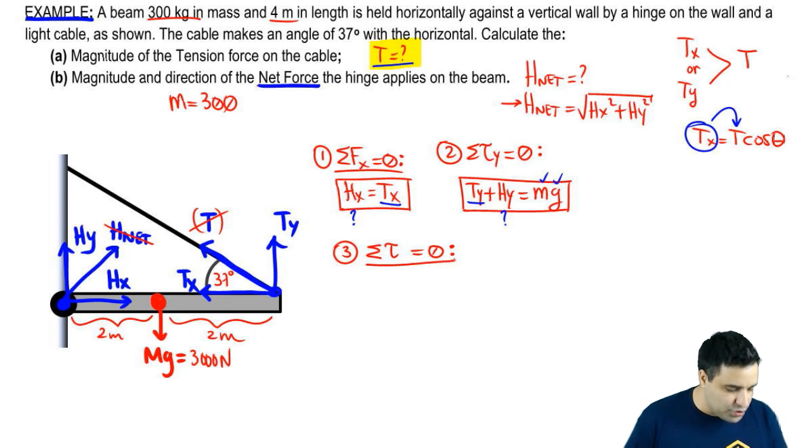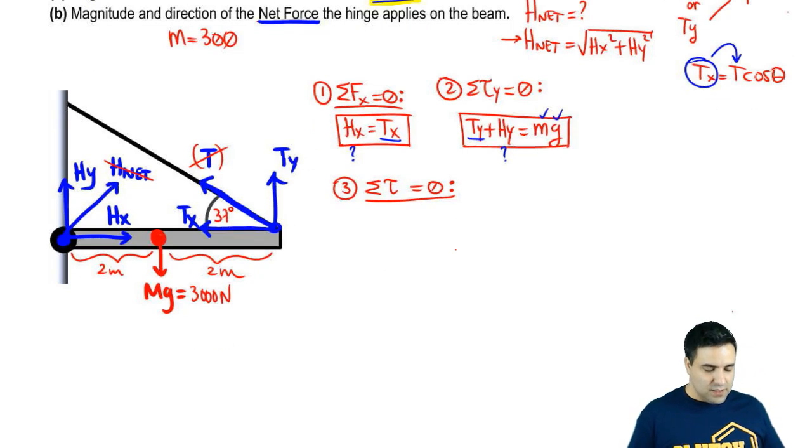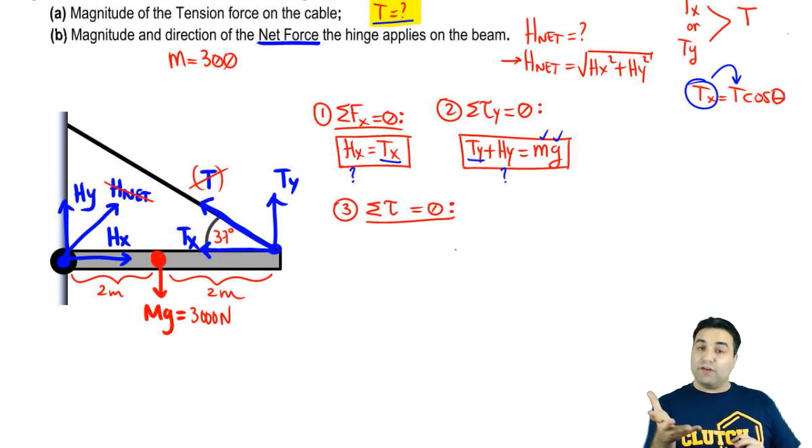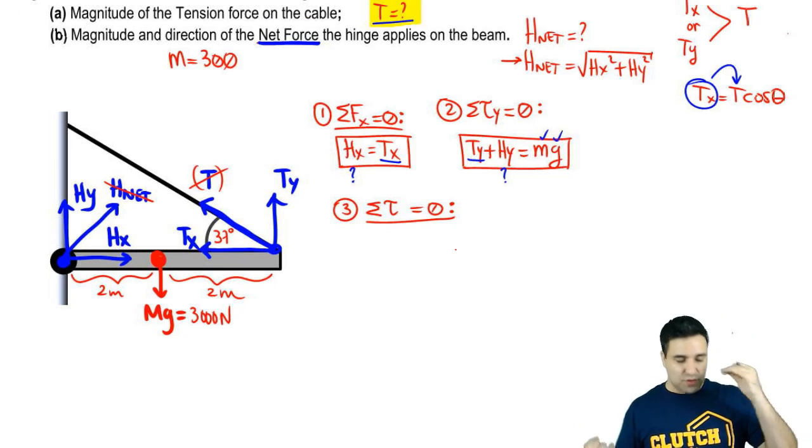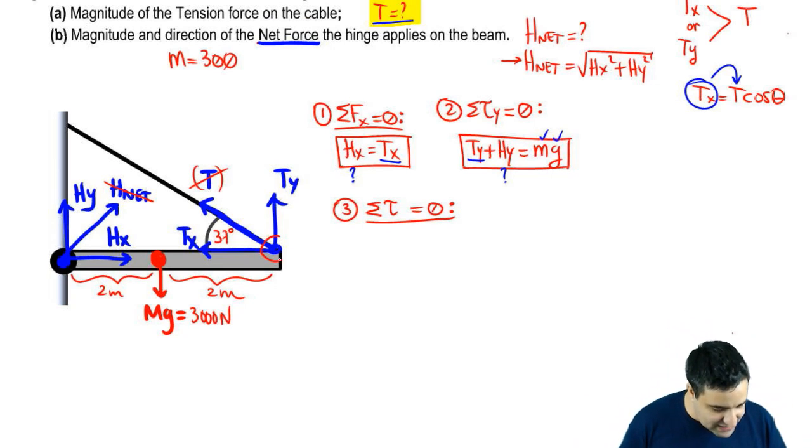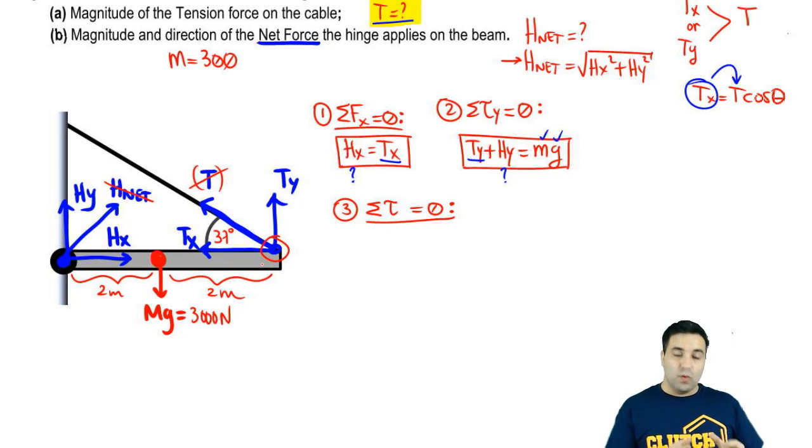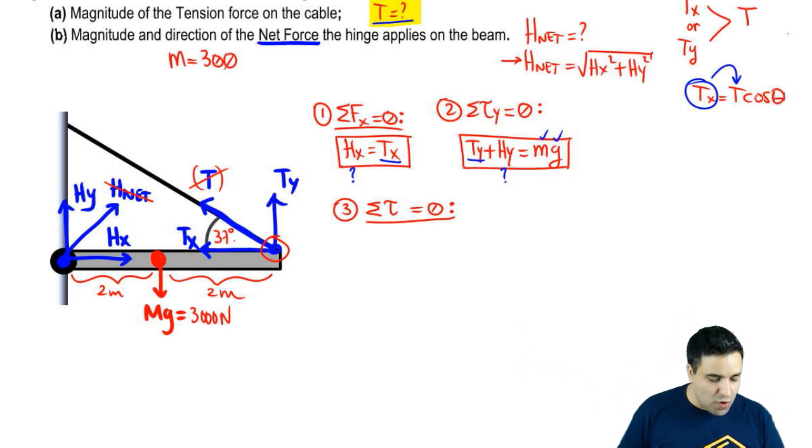If we're looking for T, we're first looking for either Tx or Ty, both of which act here. Both of which act at this point here. So what we want to do is we want to write a torque equation at a point away from that point where the T is so that T's will show up on my torque equation. So I have a few points that I could pick here. One at the hinge, two at Mg, and three at the end where the tension happens.